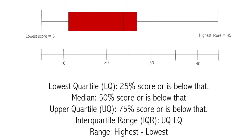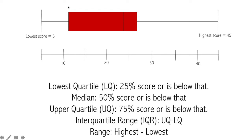The SAT uses a percentile system. If you score in the 99th percentile, you scored better than 99% of candidates. The lower quartile is the bottom 25% — if you are at the lower quartile, 25% of people scored below you. The median line means 50% scored better than you and you scored better than 50%. If you are in the upper quartile, you scored better than 75% of people, or only 25% did better than you. The interquartile range is the difference between the upper and lower quartile.